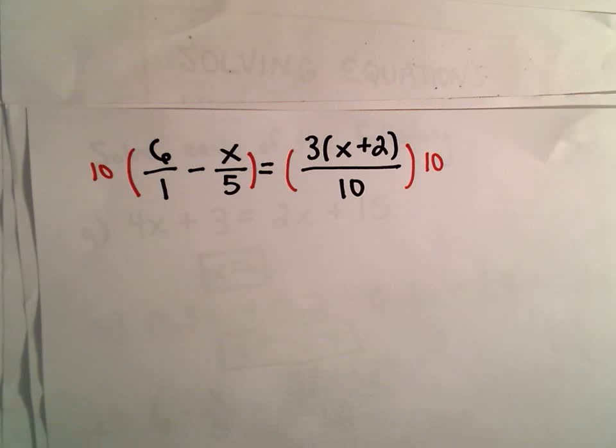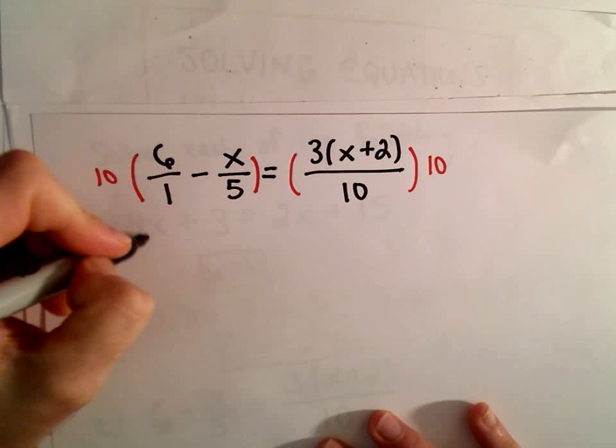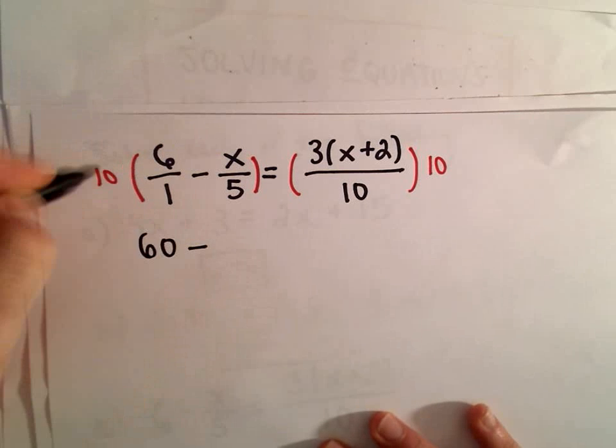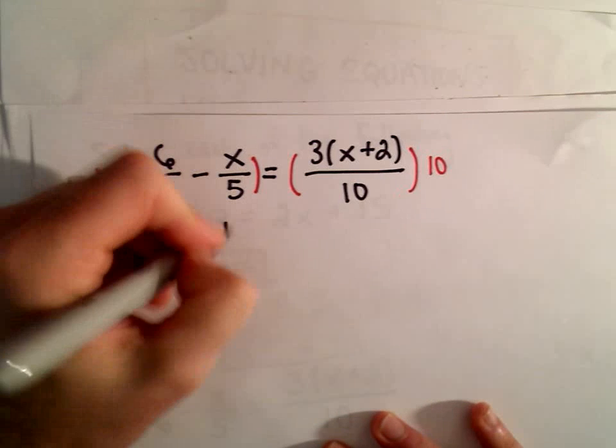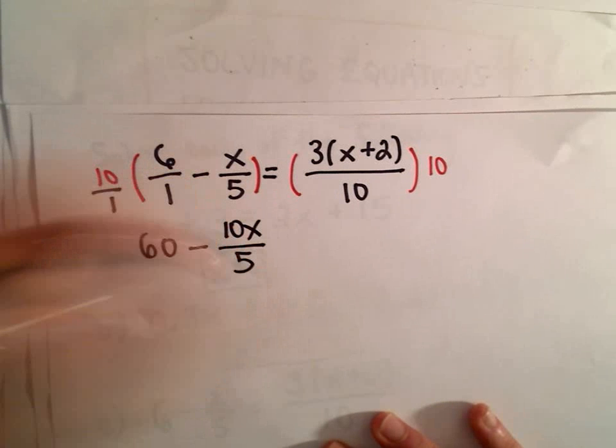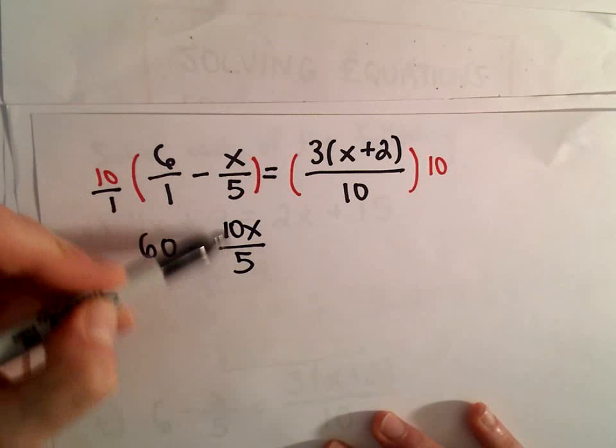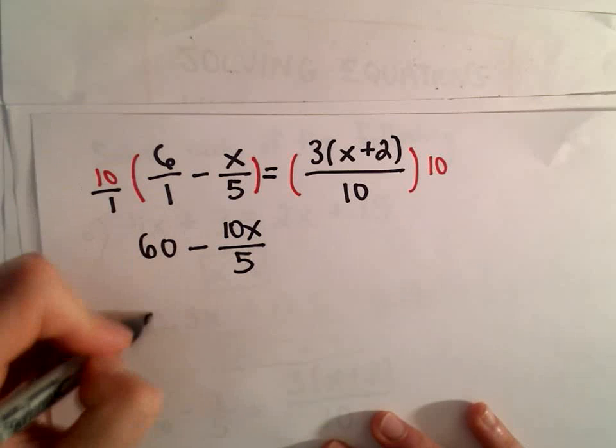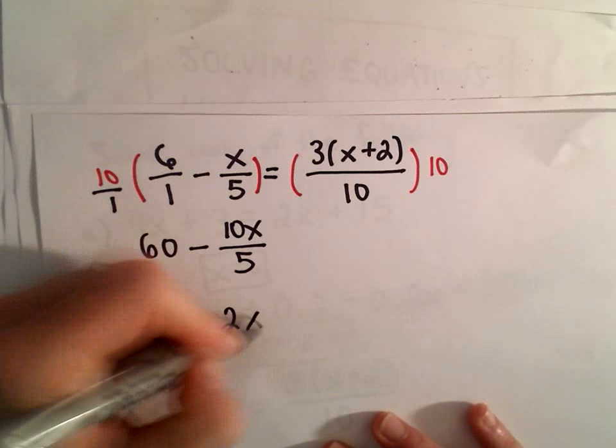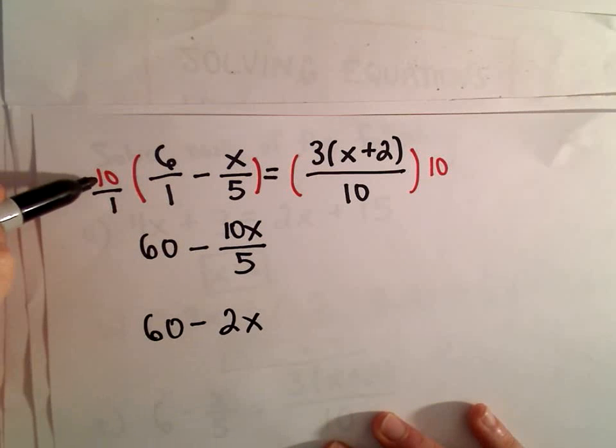So, on the left side, if we distribute, well, 10 times 6 will be 60. I'll write it out. This is 10 over 1. We would get 10x over 5. But 10x over 5 is just going to be 2x, right? So, we're getting rid of the fractions by multiplying by 10.